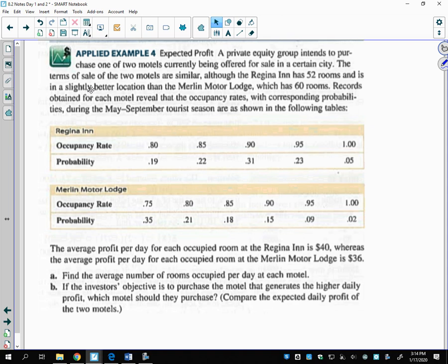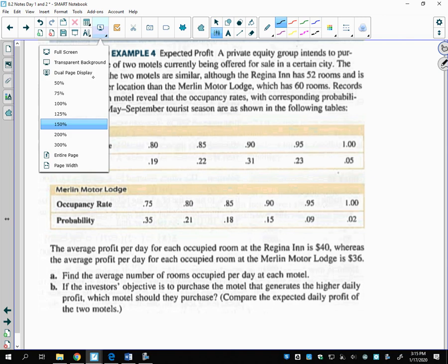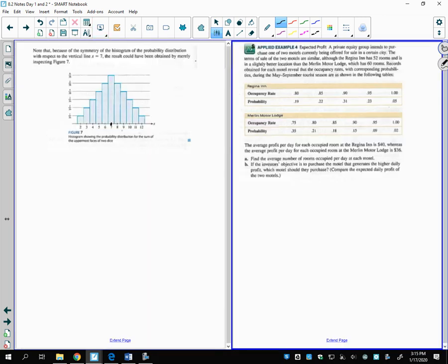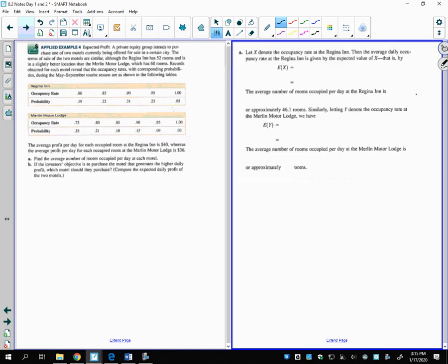Notice the occupancy rate is like how full they are, like 80% full. There's a 19% chance that's going to happen. If they're 100% full, that only happens 5% of the time. For the Merlin Motor Lodge, we have these as our occupancy rates and these as our probabilities. The average profit per day for each occupied room is $40 at the Regina Inn, whereas the average profit per day for the Merlin Motor Lodge is $36. Part A says find the average number of rooms occupied per day at each motel.